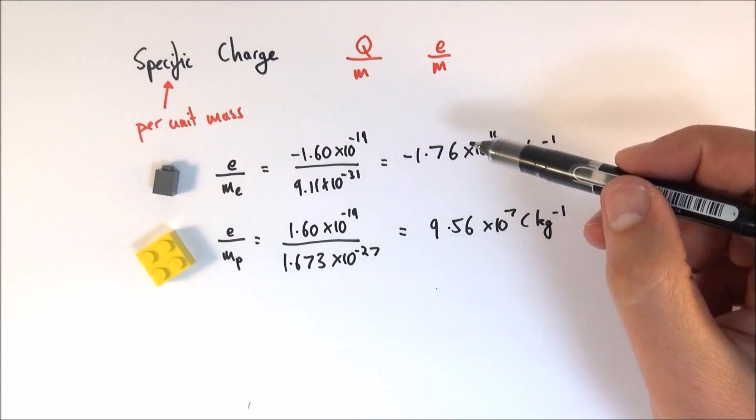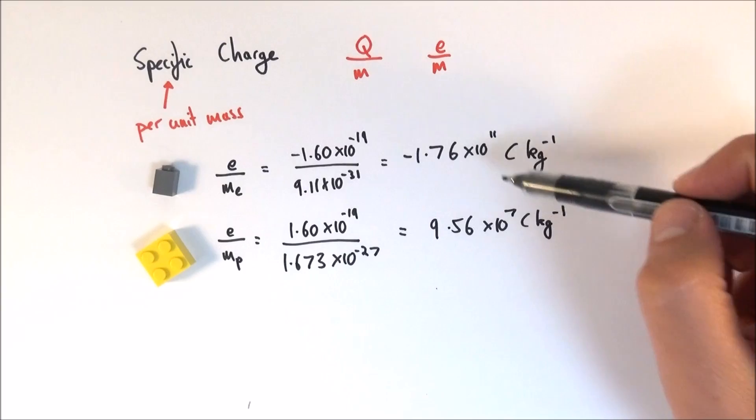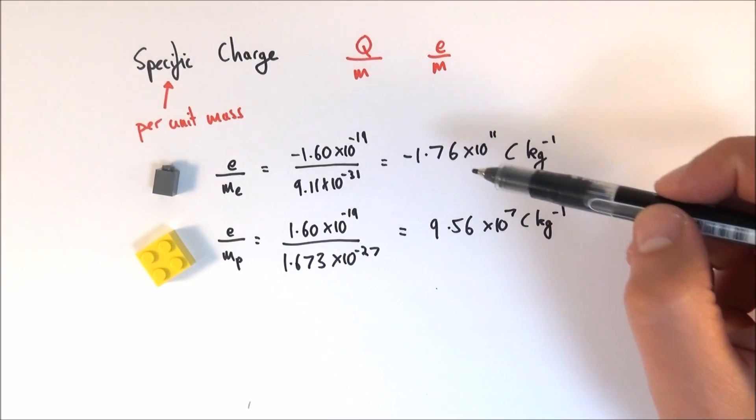So these two things have the same charge, this one here has a lot less mass so that the charge to mass ratio is a lot higher.